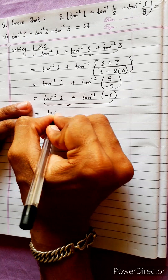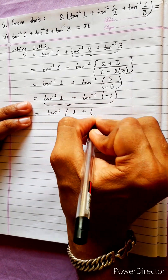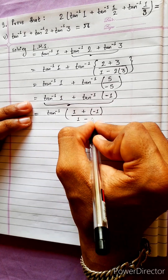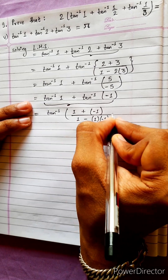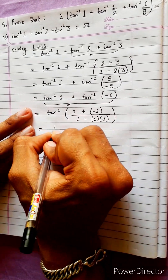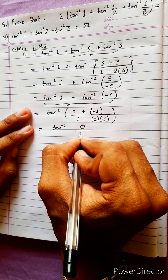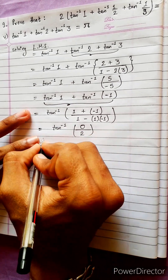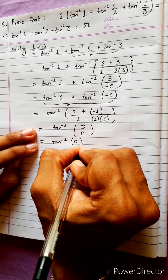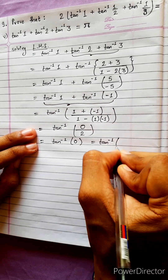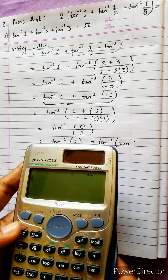Using tan⁻¹((a+b)/(1-ab)): the numerator gives 1 + (−1) = 0, and the denominator gives 1 − (1)(−1) = 2, so we get tan⁻¹(0/2). tan⁻¹(0) — since tan(0) = 0 and tan(180°) = 0.